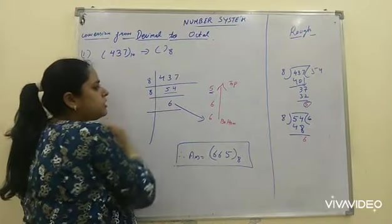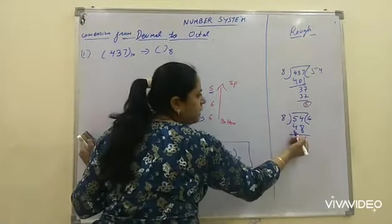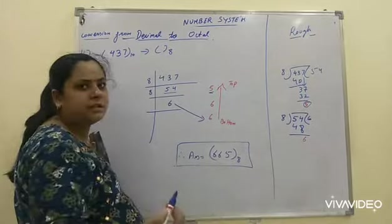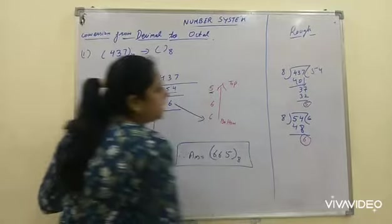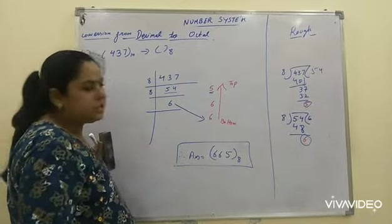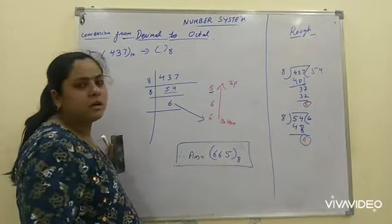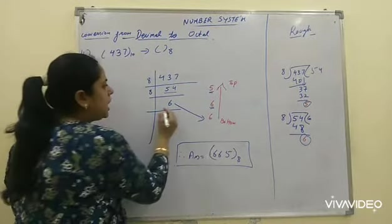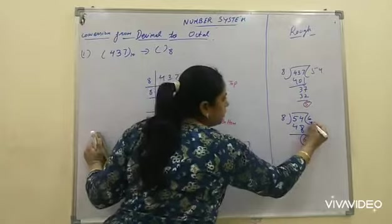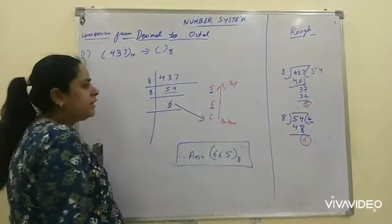Again, we divide this quotient by 8. 8 times 6 is 48. Because it's 54, that is not divisible. 8 times 6 is 48. Remainder will get 6. 14 minus 8 is what? 6. So, remainder will write it here and this quotient will write here.